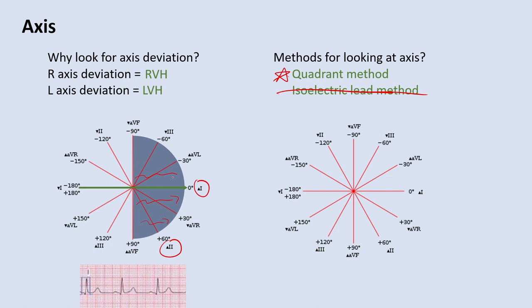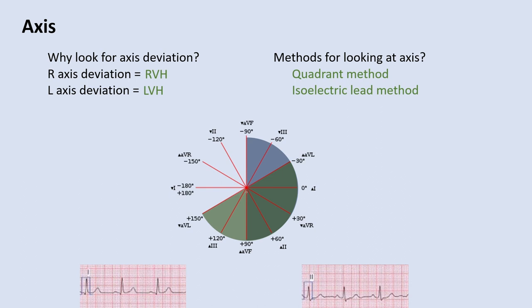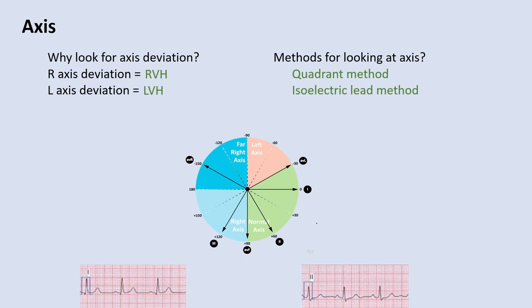Lead 2 is created when you make the right arm negative and the legs positive, giving a plus-60-degree axis for lead 2. If the depolarization of the heart is generally in that direction, you get a positive QRS complex. Combining leads 1 and 2, if you have a positive QRS in lead 1 and a positive QRS in lead 2, the overlap tells you the orientation of the heart is in the normal direction. Normal axis is in that middle zone; left axis is up, and right axis is down.